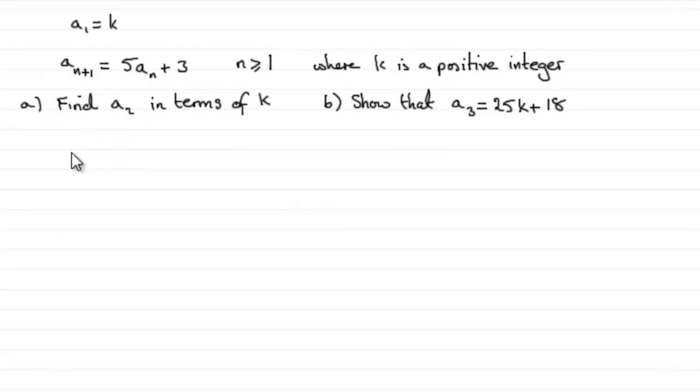Okay, so for part A, to get the second term in the sequence, all I have to do is simply let n equal 1. So when n equals 1, I'll just put that down here. We get a₁ plus 1, a₂ in other words, the second term is equal to 5a₁ plus 3.